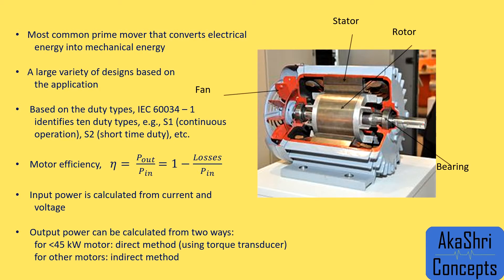That rotating magnetic field basically pulls the rotor and causes rotation. The rotor is connected with the shaft, and that rotation of the shaft can be used to rotate fans, pumps, or any other application. The shaft is supported by bearings, and in this process heat is generated, so to cool the motor we use a fan to blow air through the fins provided on the surface.